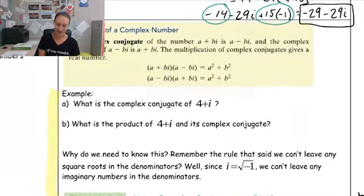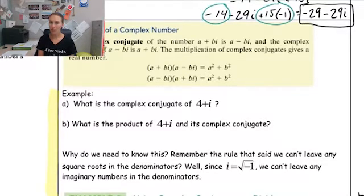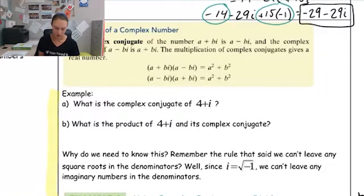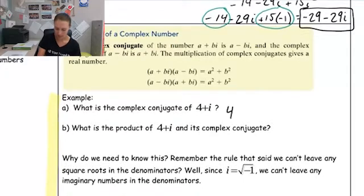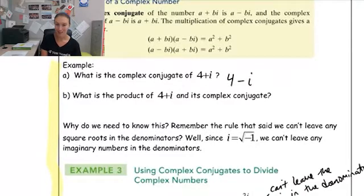What is a complex conjugate? The complex conjugate of the number a plus bi is a minus bi. The real part — the a part — stays the same, but the imaginary part switches signs. So the complex conjugate of four plus i would be four minus i. When you multiply these together, it's like magic and it makes the i's disappear.